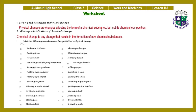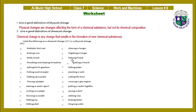Worksheet Question 1: Give a good definition of physical change and chemical change. Physical change is a change affecting the form of a substance but not its chemical composition. Chemical change is any change that results in the formation of new chemical substances. Label the following as chemical change or physical change: radiator boiling over, chewing up a burger, rusting iron, digesting a burger, moldy bread, baking bread.